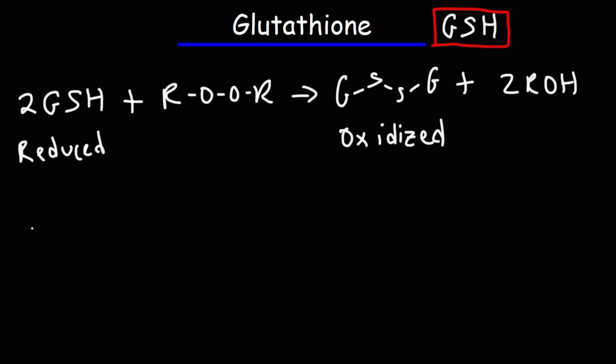Another way is in its ability to reduce free radicals or neutralize free radicals. A free radical is basically an atom with an unpaired number of electrons, or an odd number of electrons.